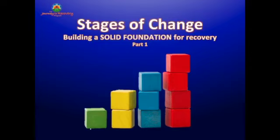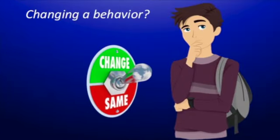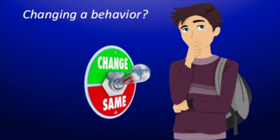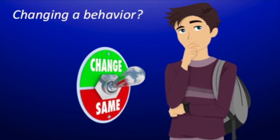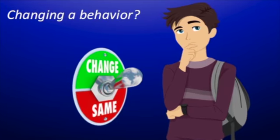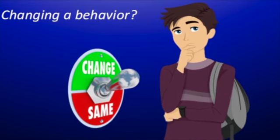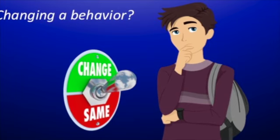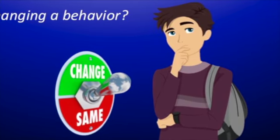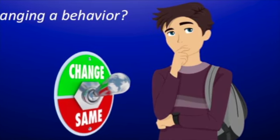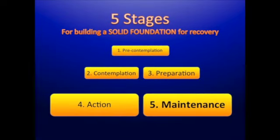We're going to start off talking about a process called the stages of change. Anytime a person makes a decision to change a behavior that they've identified as problematic, they're going to go through a process — a series of stages. It's sort of like the stages of grief you've probably heard about, where people go through anger, denial, acceptance, and bargaining. Same thing with changing a behavior. We identify five stages that a person goes through.